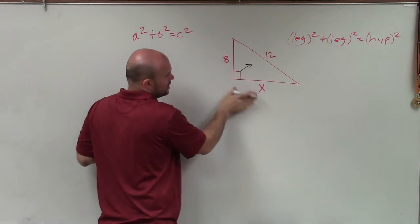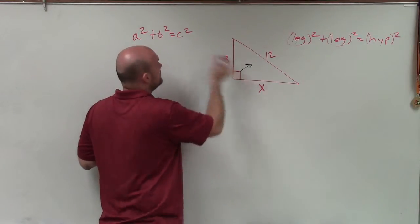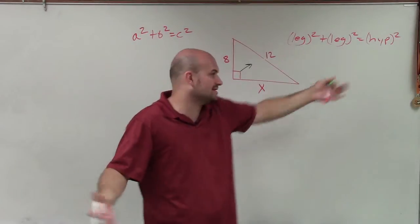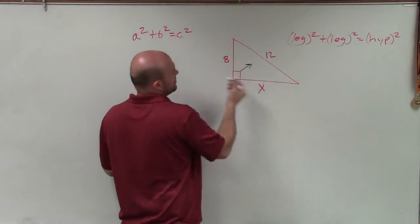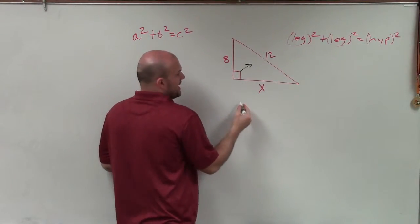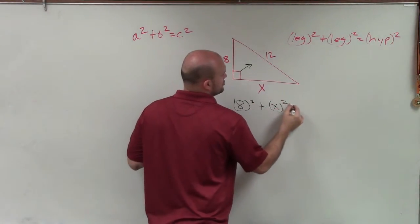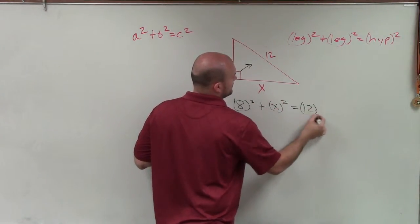Therefore, my two legs are 8 and x, or my a and my b. And it doesn't matter how you want to label them, because you can see in this formula, it doesn't matter what the legs are, or if they're a or b. You square both of them and add them. So I have 8 squared plus x squared equals 12 squared.